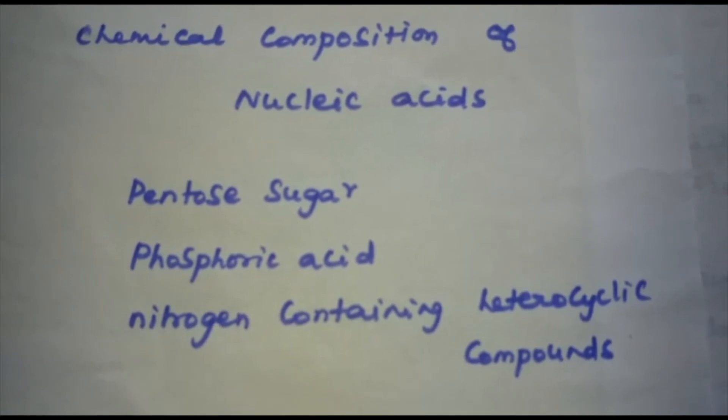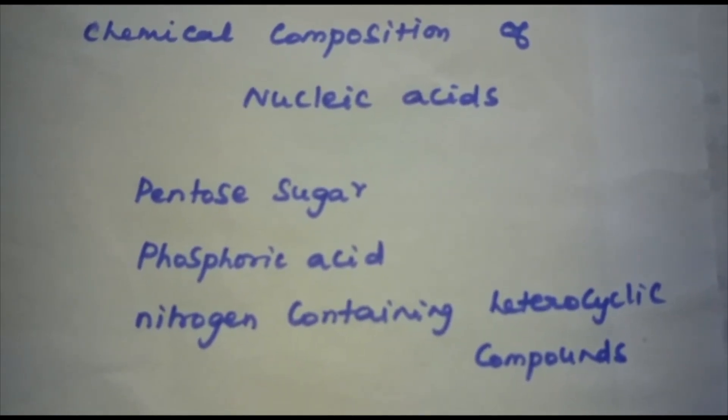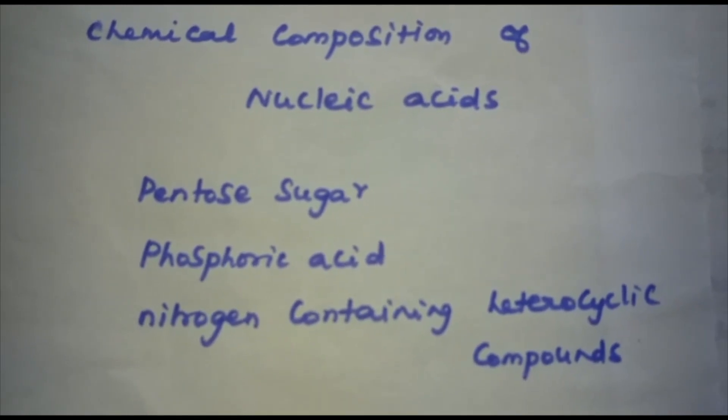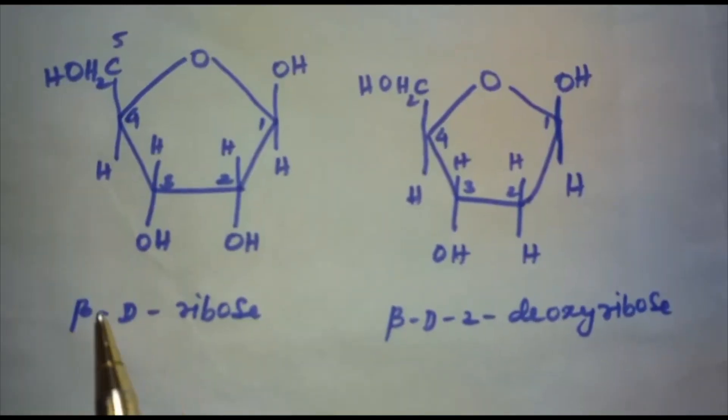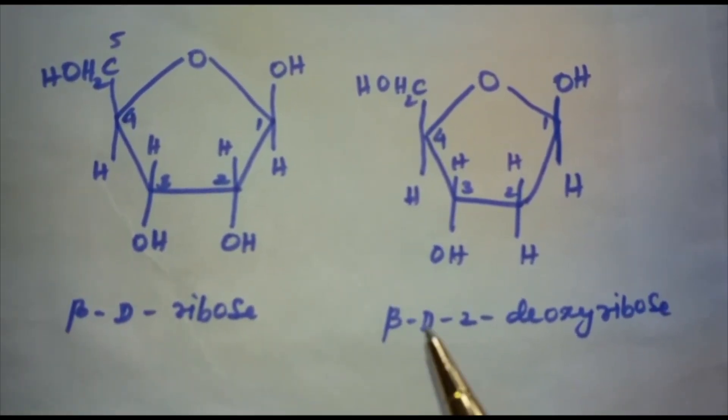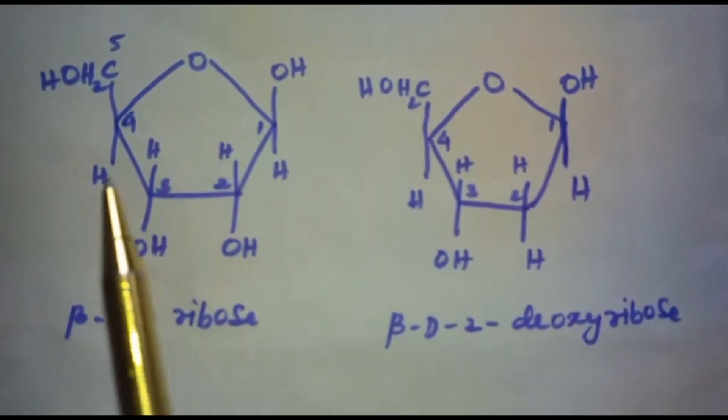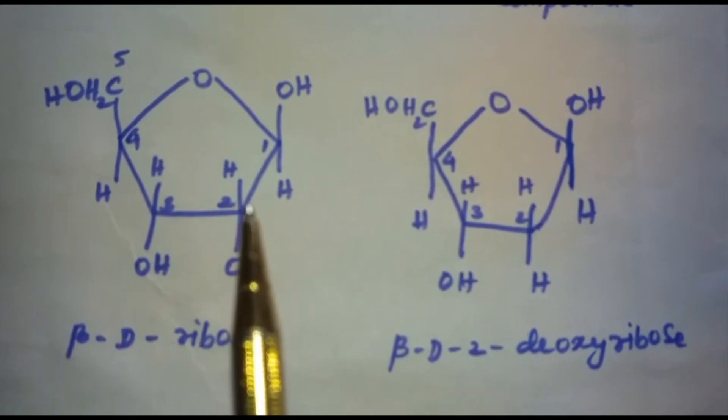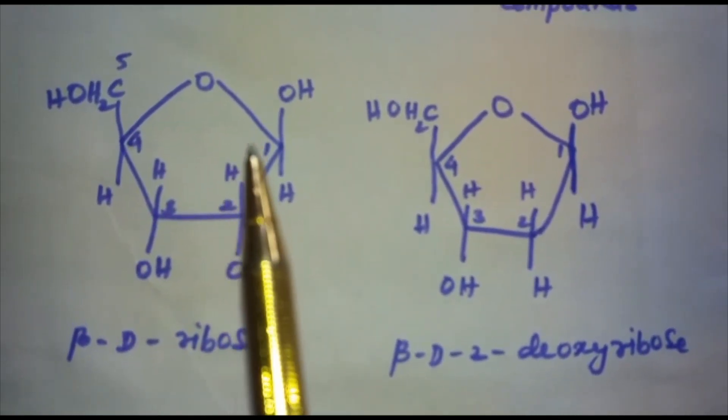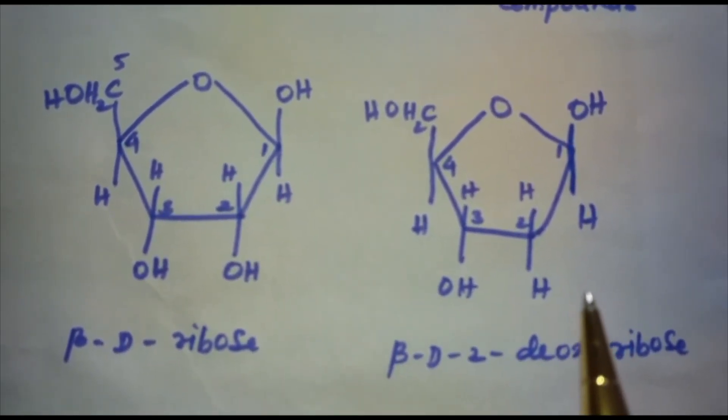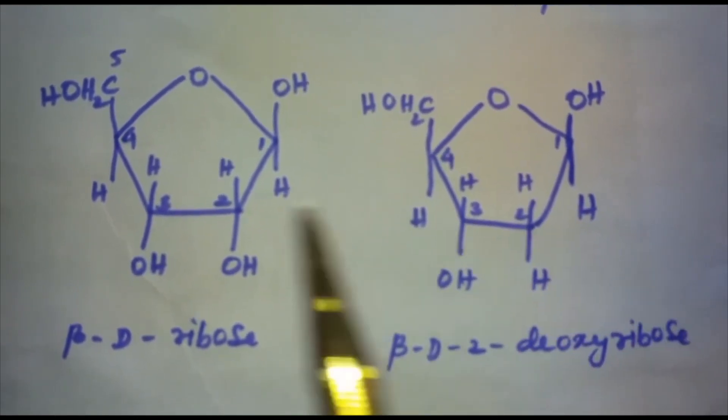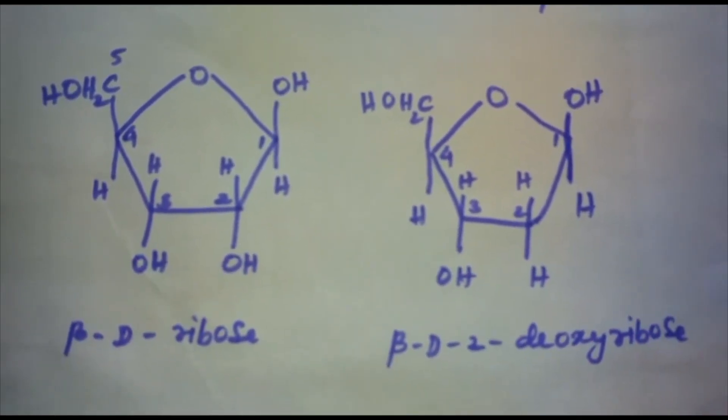Let us see the structure of beta-ribose and beta-deoxyribose. What is the difference between ribose and deoxyribose? The difference lies in the C2 carbon atom. Here we have H and OH groups, whereas in the case of deoxyribose, one oxygen atom is missing. This is the difference between ribose and deoxyribose sugar moieties.